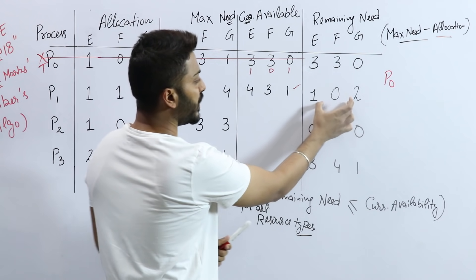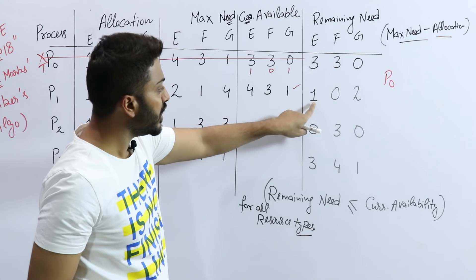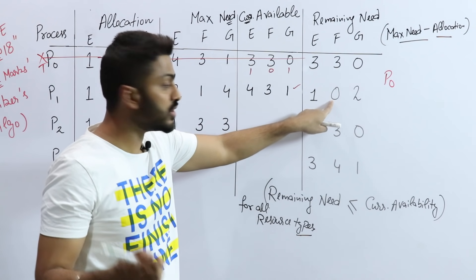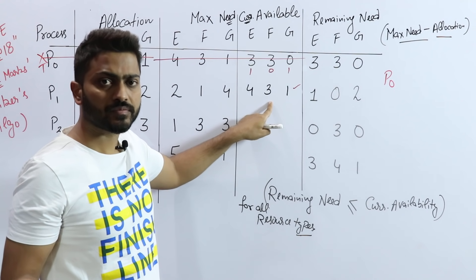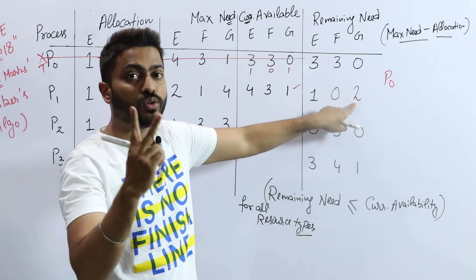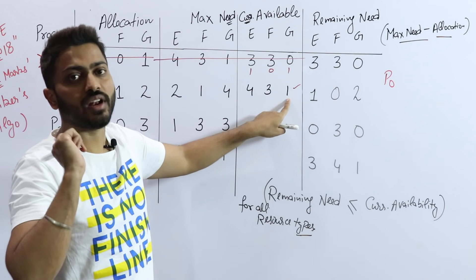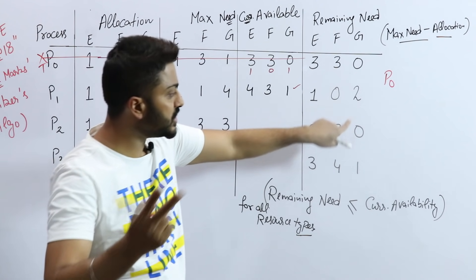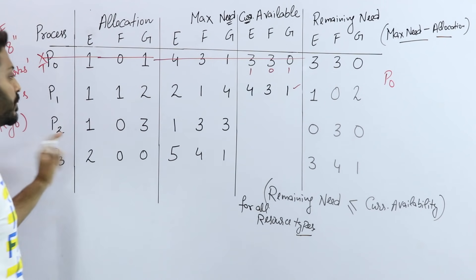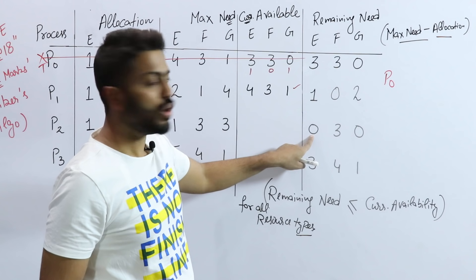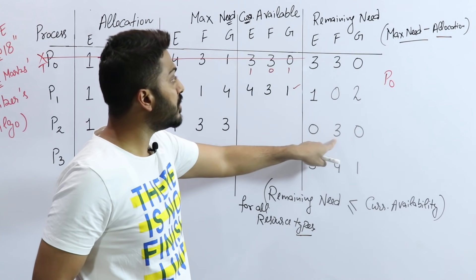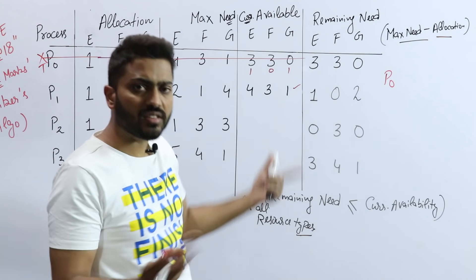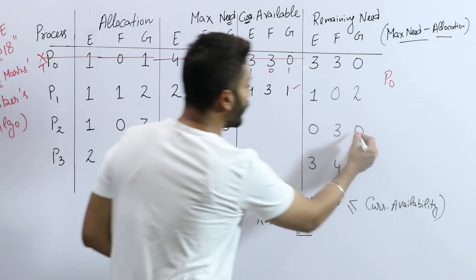Now with availability (4, 3, 1), check P1: it needs (1, 0, 2). It needs 2 of G but we only have 1 — so we cannot fulfill P1 yet. Check P2: it needs (0, 3, 0). We have 4 of E — fine. We have 3 of F — fine. We have 1 of G and it needs 0 — fine. So yes, we can fulfill P2's need now.